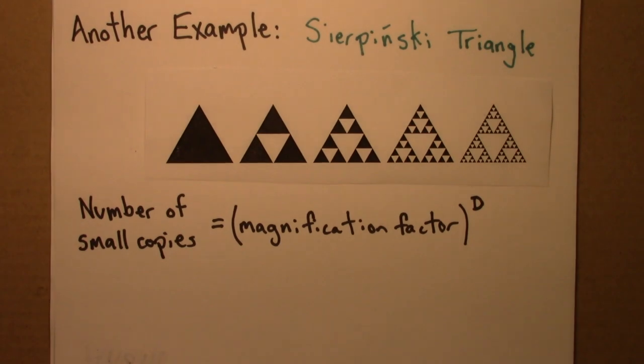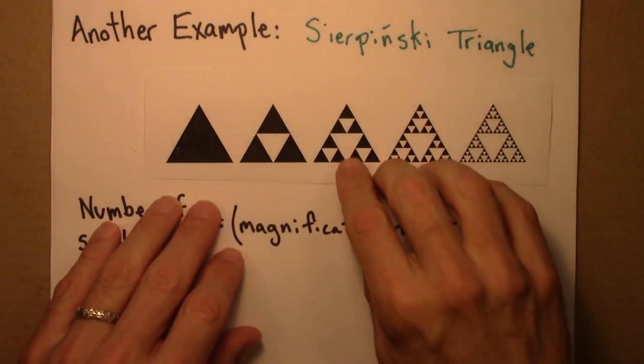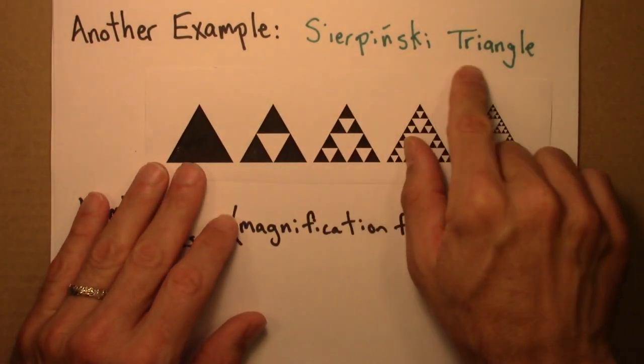Let's do another example. We'll consider a different fractal and calculate its self-similarity dimension. The fractal we'll consider now is a famous fractal known as the Sierpinski triangle.